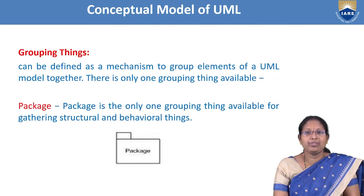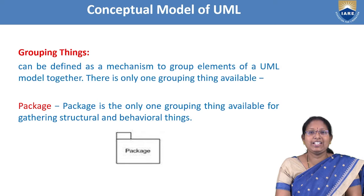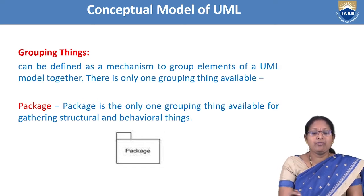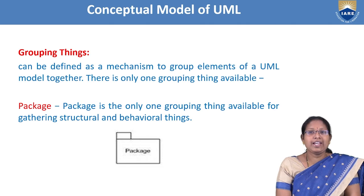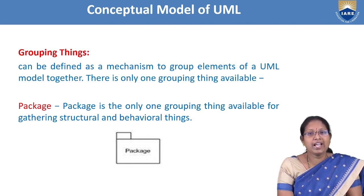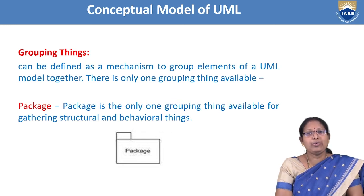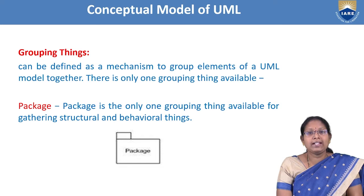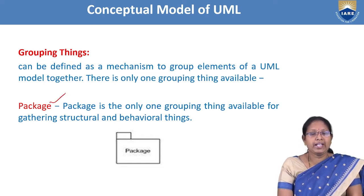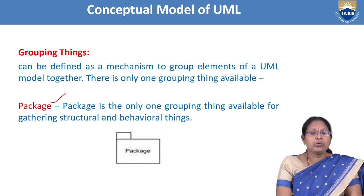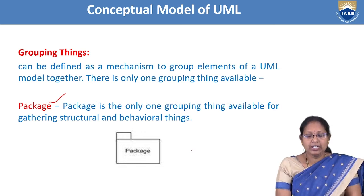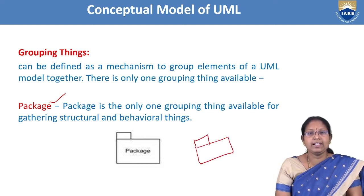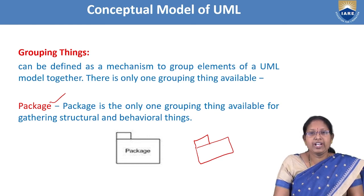The next kind of things is grouping things. A grouping thing is a mechanism to group the elements of the model together. There is only one grouping thing in UML, called a package. A package is denoted as a tabbed rectangle.